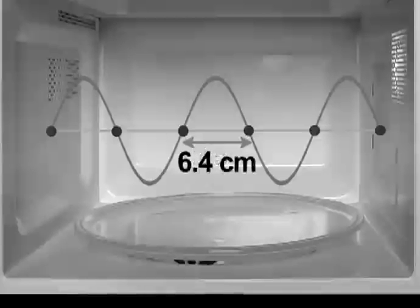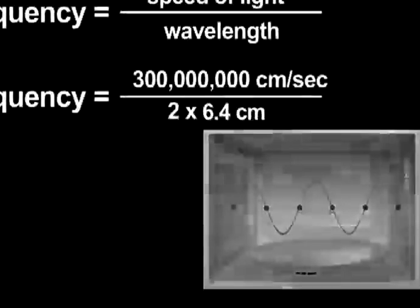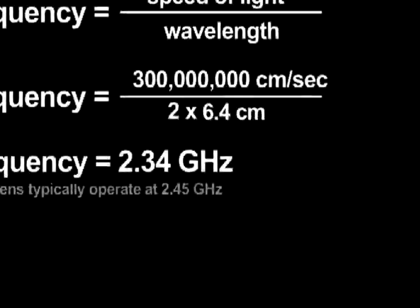Using that wavelength, I can estimate the microwave radiation's frequency. The frequency is related to the wavelength by the speed of light. I get an answer that only has a four or five percent error. Not bad for this primitive measurement.